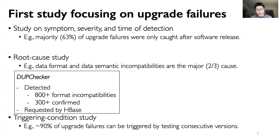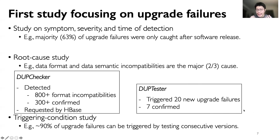We also study the triggering conditions of upgrade failures to understand how we can improve testing to detect them. For example, we found that over 90% of upgrade failures can be triggered by testing consecutive major or minor versions. We further developed an automated testing tool called DUP tester, which detected 20 previously unknown upgrade failures, and seven of them are confirmed.